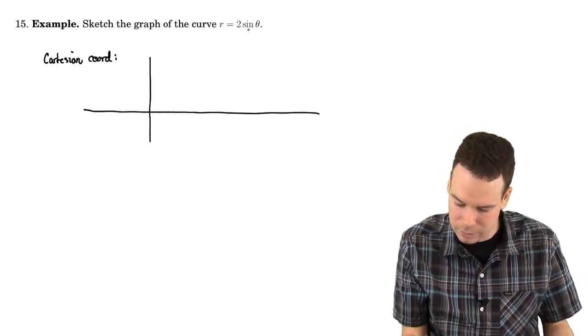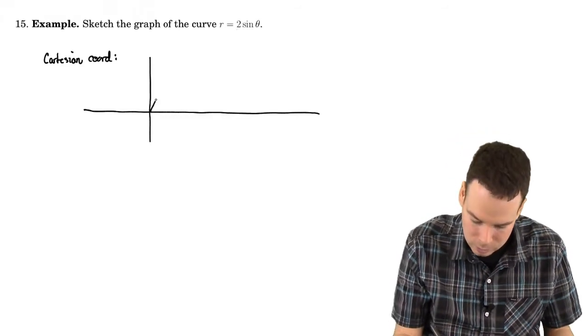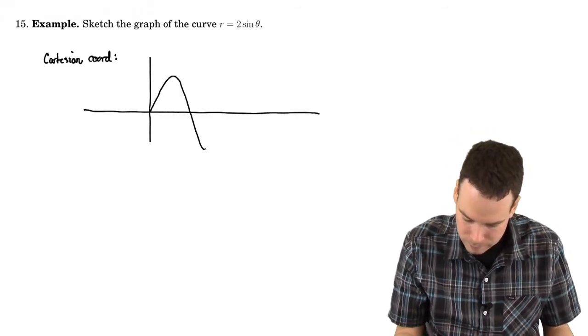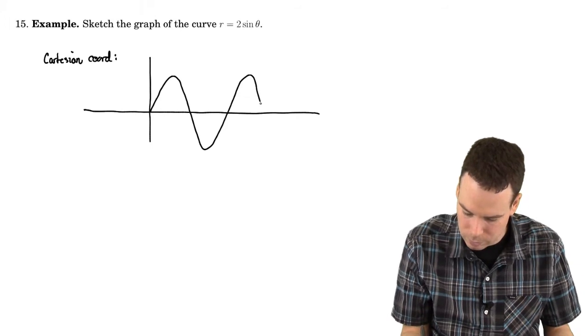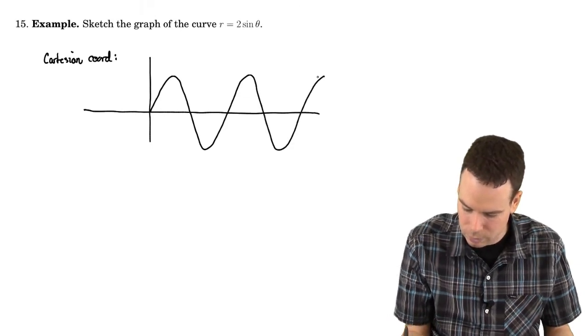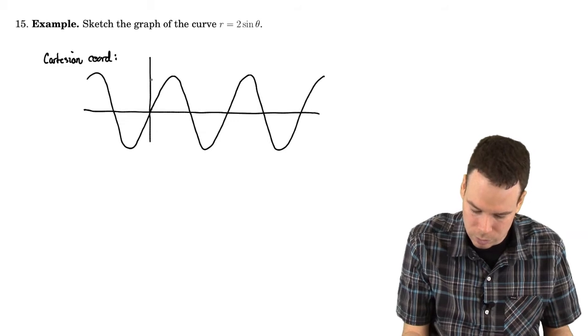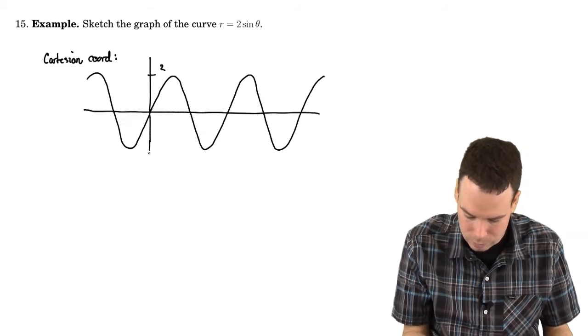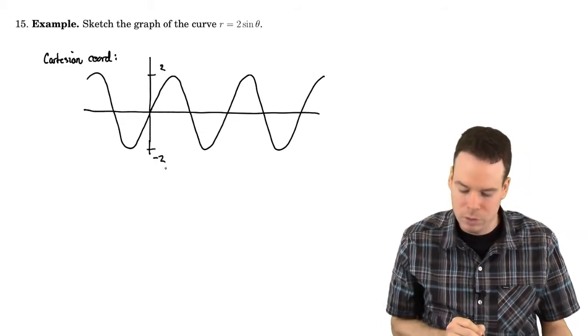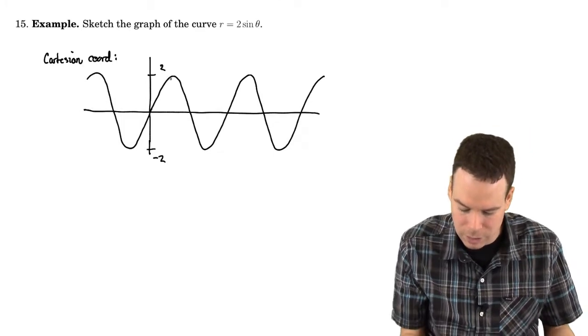The way I would do this is I'd say, well it's the sine function whose amplitude is now 2. So it's the sine function, and its amplitude is now 2, so we're going up 2 units, we're down to negative 2.